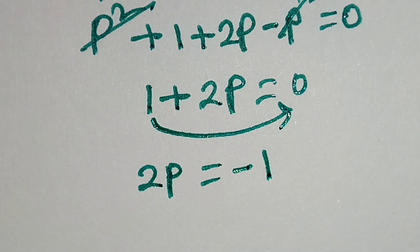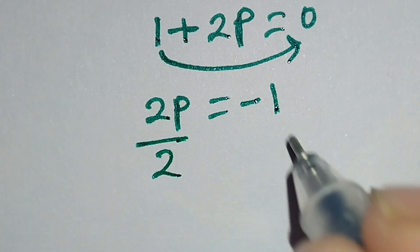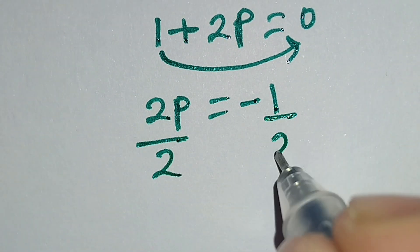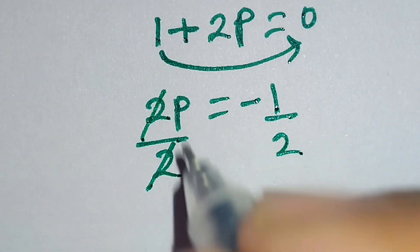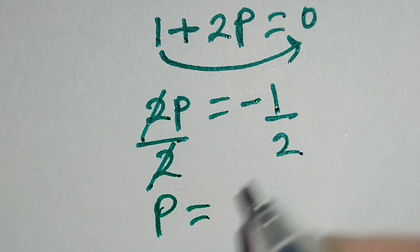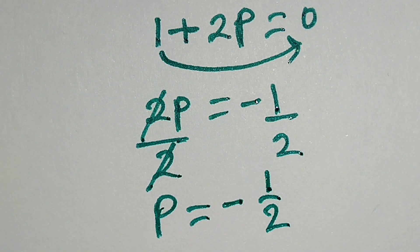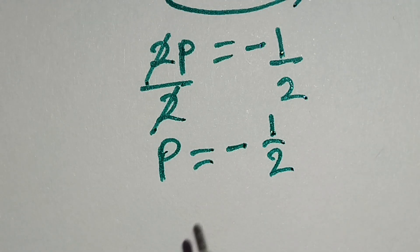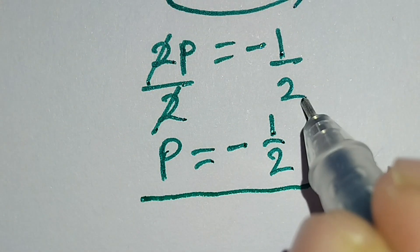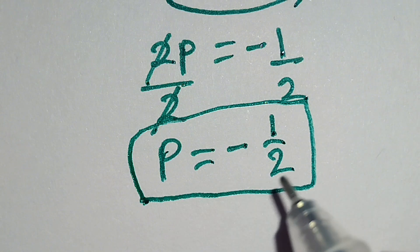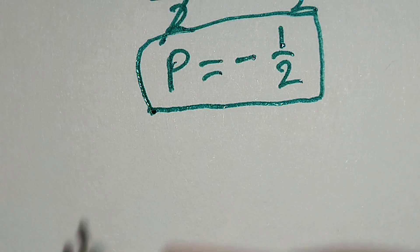Now this 1 goes to the right side, so here we have 2p is equal to minus 1. Now we will divide both sides by 2. Here this 2 and this 2 cancel out. Here only p remains, so p is equal to minus 1 over 2. This is the right value of p. Now we will verify.